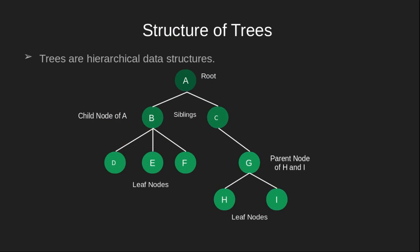Trees are made up of nodes and edges. The topmost node is referred to as the root node. In this example, A is the root node. Nodes which are directly below a node are known as its children, and that node is referred to as the parent. So B and C are children of A, and A is the parent of B and C. Similarly, G is the parent of H and I.